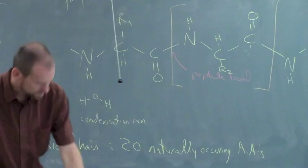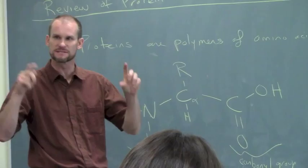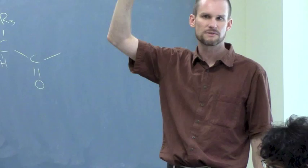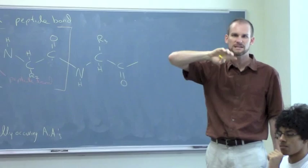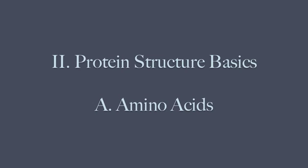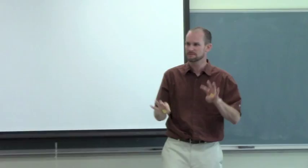R equals a side chain. There are 20 naturally occurring amino acids, and those are what make the interesting chemistry and make proteins do different things. How many people know there are 20 amino acids? Let's get into groups of two and see if we can write down the major classes of amino acids.